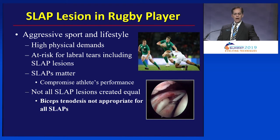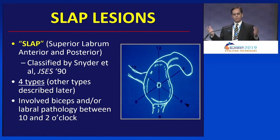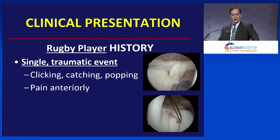SLAP, as we know, is an acronym for superior labrum anterior and posterior. It was originally four types. The reality is there are tons of different types of SLAPs, and that matters. We need to recognize that and make decisions about how to manage these based on a lot of scenarios, including clinical presentation and pathology.